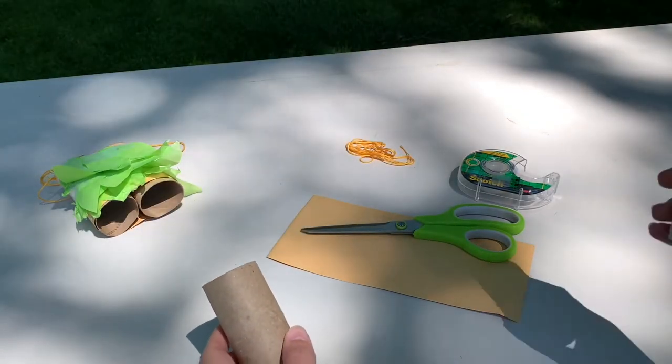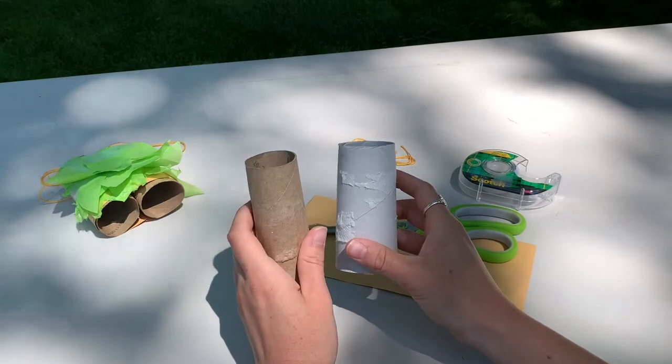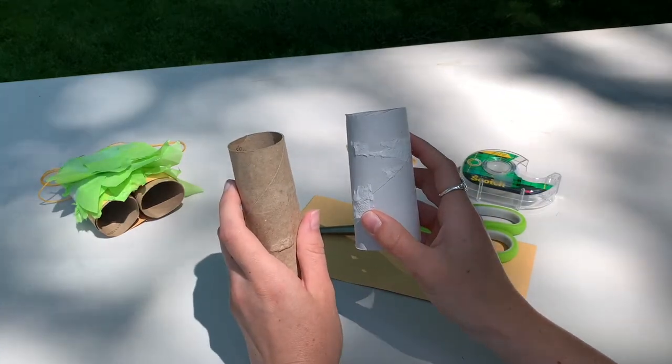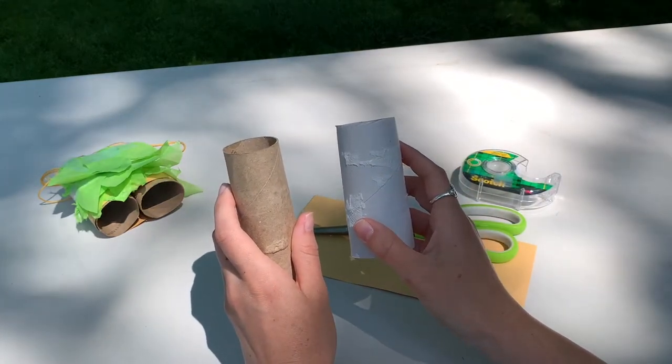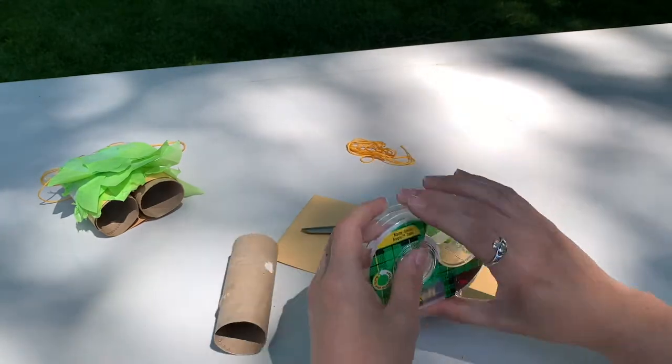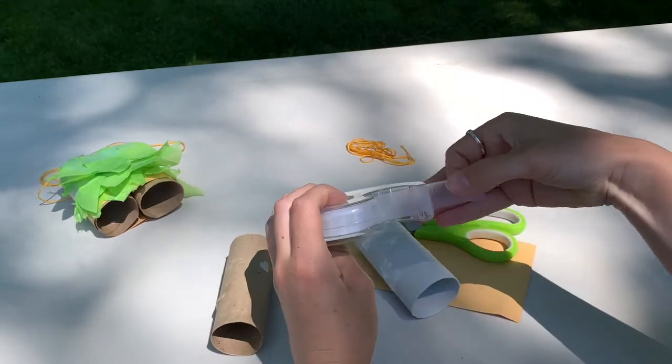So what you're going to need to make this craft is two toilet paper rolls, a piece of paper to wrap around the toilet paper rolls, some tape or glue, some tissue paper or actual leaves to decorate it, and a piece of string.